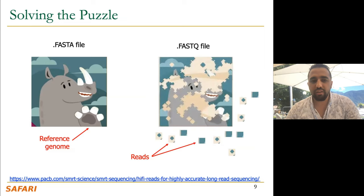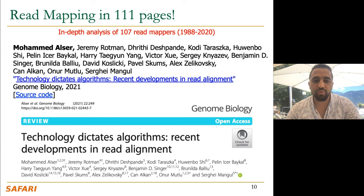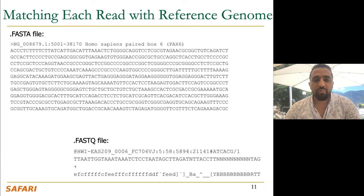Regardless of the data you use, you still want to map these pieces together to build back the full sequence. You have this puzzle and you look at the reference picture on the left side, and you'd like to match these small pieces to the full picture to construct or solve the puzzle — that's what we call read mapping. In our paper, along with my colleagues, we survey most existing read mapping tools starting from 1988 all the way to 2020, including Minimap2 as the most recent state-of-the-art read mapper.